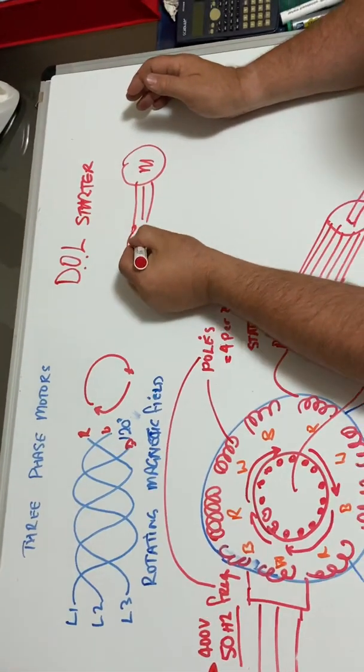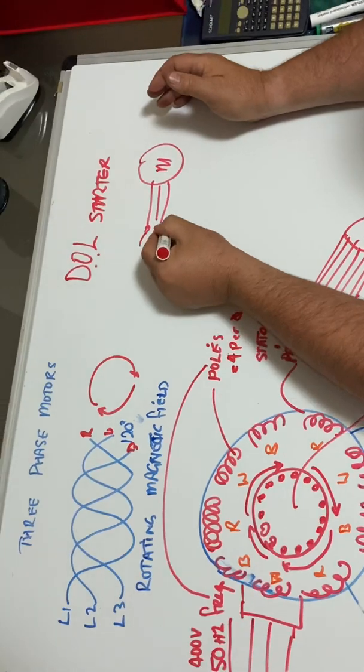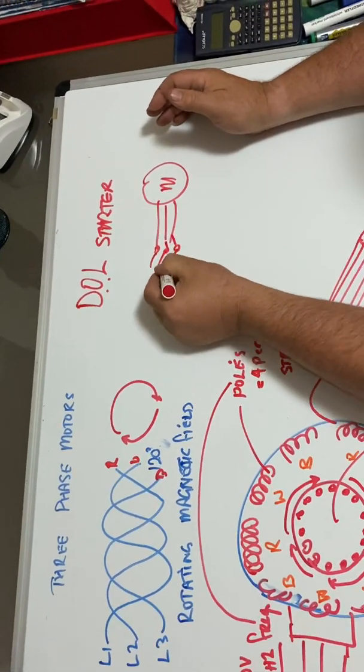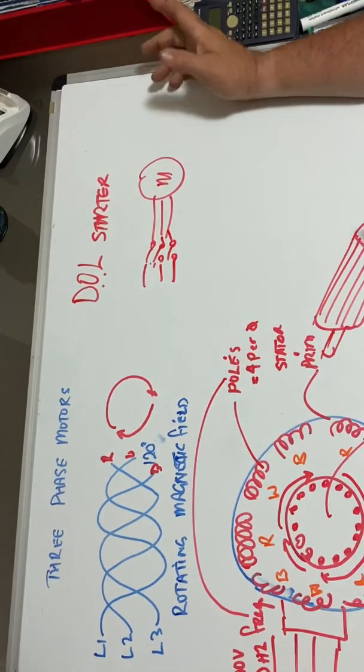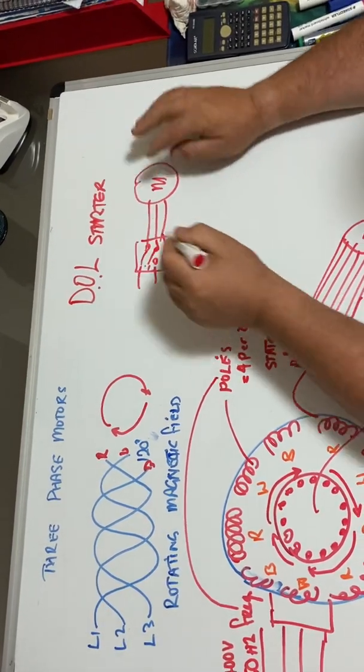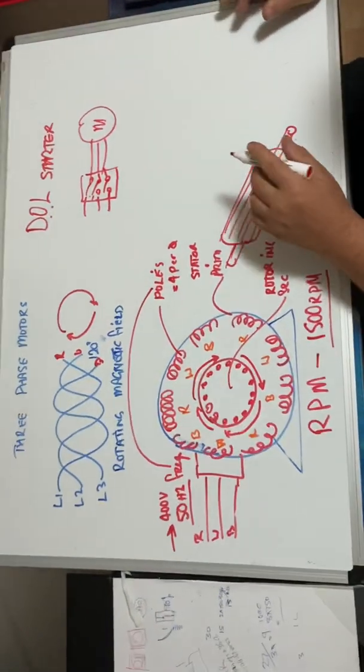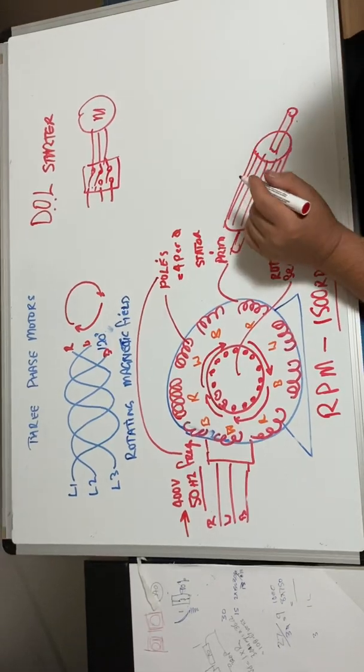With them, all we do is we put a contactor. We'll have a motor here, three phases into a contactor. That's our contactor. We don't do anything with that. That's called a DOL starter - contactor basically turns the motor on straight online.